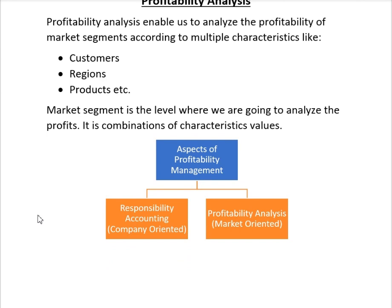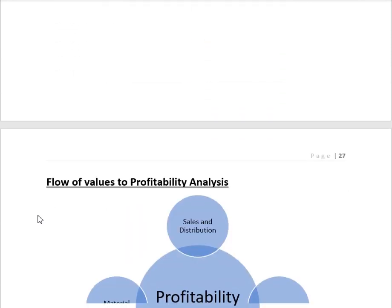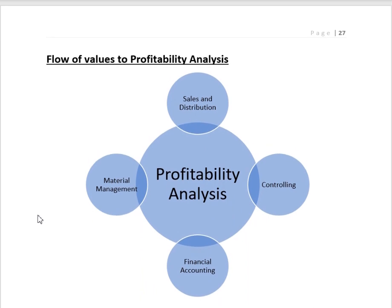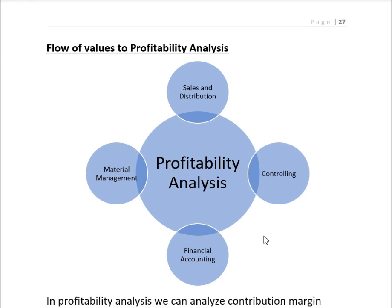There are two aspects of profitability management. The first is responsibility accounting, which is company-oriented, and for that we use profit center accounting. The second is profitability analysis, which is market-oriented, and for that we use the Profitability Analysis tool in the Controlling module — known as COPA. To analyze profitability, we compare revenue and cost: revenue comes from the Sales and Distribution module, and cost comes from Financial Accounting, Material Management, and Controlling.